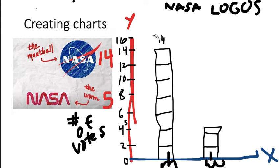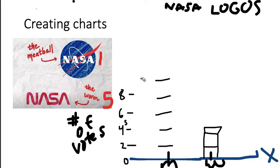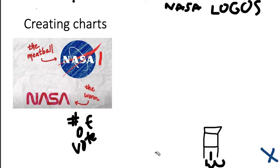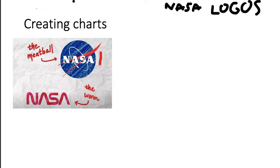Now, real quick, I want to show you how it would look on a picture graph. Let me erase this off. Get out of here. Disappear. Perfect. So remember, it was 14 that voted for the meatball and only 5 voted for the worm. The worm is pretty cool. You know, maybe you like the worm.